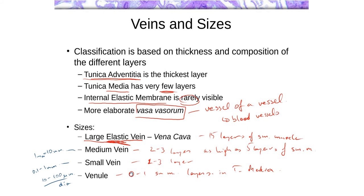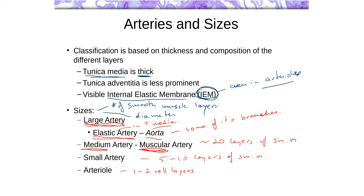Going back to arteries for sizes: arterioles are also about 10 to 100 micrometers in diameter. Small arteries are 0.1 to 2 millimeters in diameter. This may not be terribly useful for microscopy because you're usually not going to be able to measure these easily, except for capillaries. Red blood cells in arterioles and venules will help you measure things properly. The aorta and some of the larger arteries are probably more than one centimeter.